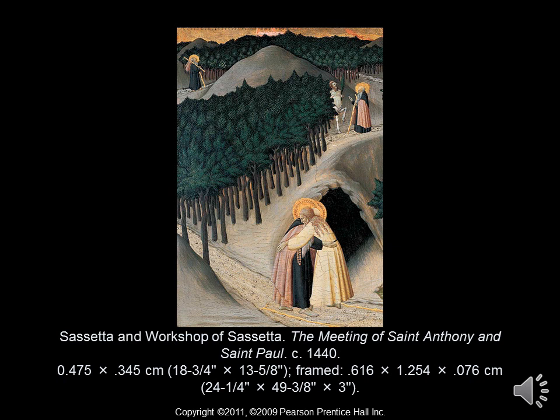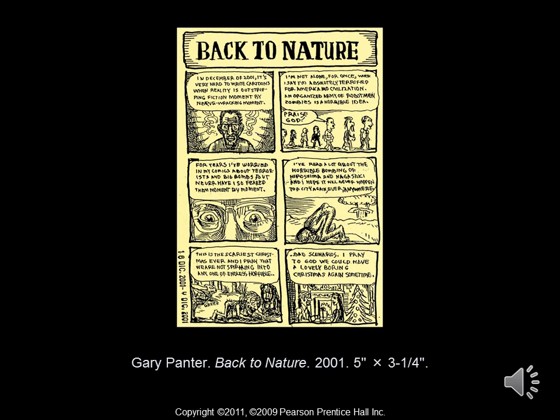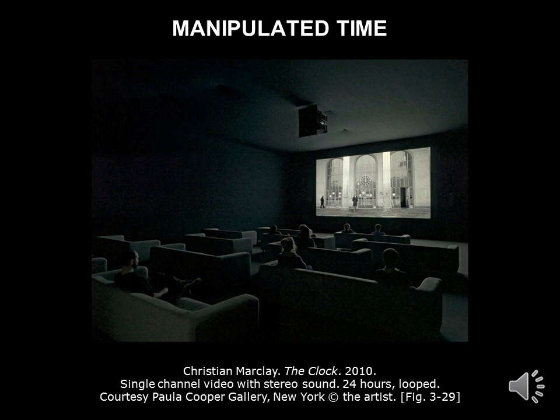Time is made visible in this painting by showing St. Anthony at different points on his journey to meet St. Paul. You have him starting his journey in the upper left-hand corner, in the upper right-hand corner he meets a centaur, and at the bottom he's meeting St. Paul. He's smallest in the upper left, a little larger on the right, and even larger at the bottom, showing a progression through space as well as time. When it comes to comics, time tends to be told in a linear fashion — here we have a comic by Gary Panter, Back to Nature from 2001, where time is made visible by a gradual progression in thoughts and reactions to the events of September 11th.